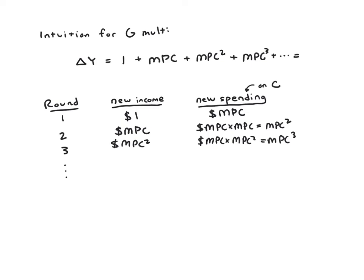And it turns out that if you remember from your study of the geometric series, probably at some point in high school, this type of geometric series converges to 1 over 1 minus MPC. So that gives us the G multiplier for a $1 increase in spending. The change in output is going to be 1 over 1 minus MPC based on this simple model.